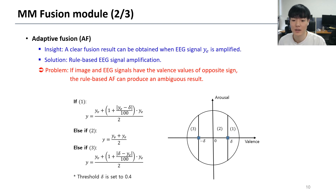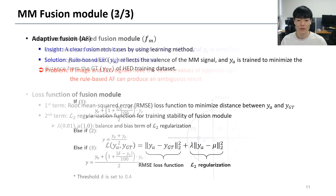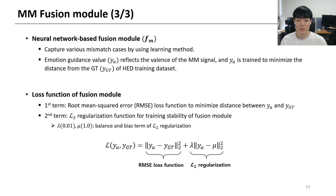However, if the image and EEG signals have valence values of opposite sign, the rule-based adaptive fusion, shortly AF, can produce an ambiguous result. So we propose a neural network-based fusion module to capture various mismatch cases. The loss function of the fusion module has two terms: RMSE loss function and L2 regularization.